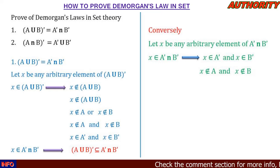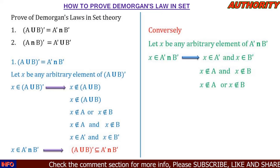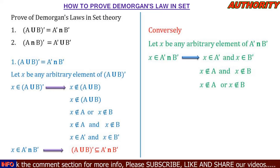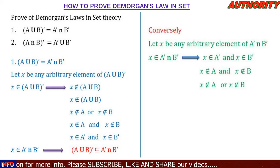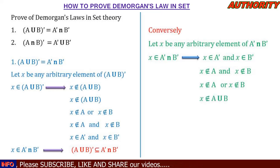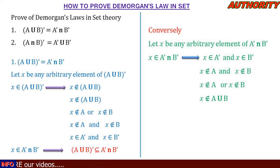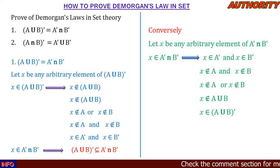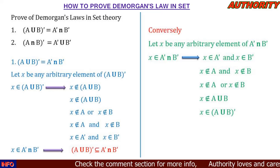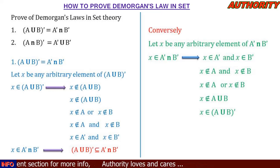If x is not in A and x is not in B — or we can say x is not in A or x is not in B — that means x is not in A union B. And if x is not in A union B, it implies that x is in (A union B) complement. So we started by saying x exists in A complement intersection B complement and ended up finding that x also exists in (A union B) complement.